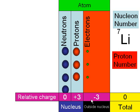The proton number, sometimes called the atomic number, is the number of protons inside the nucleus — in this case three. We can see that if we take away the proton number from the nucleon number, we're left behind with the neutrons.